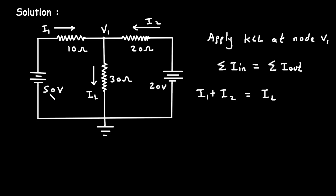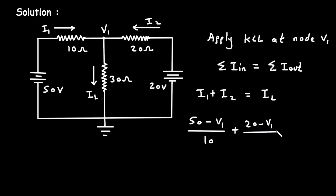We can write I1, I2, and IL in voltage form. I1 can be written as (50 minus V1) divided by 10 ohm. Similarly, I2 can be written as (20 minus V1) divided by 20, and this equals IL. IL can be written as (V1 minus 0) divided by 30, since the reference node voltage is 0.